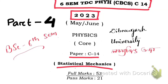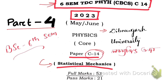Hello friends, this is part four of the solved paper of Statistical Mechanics C14, De Bruyne University's sixth semester 2023. Before we start, please do subscribe to the channel, hit the thumbs up button, and share with your friends to inspire me to create new content for you.